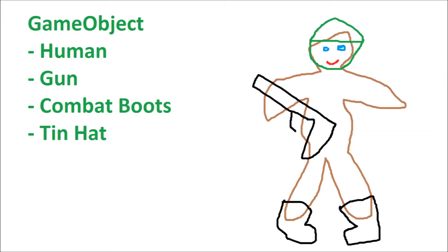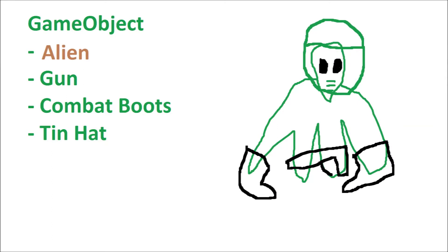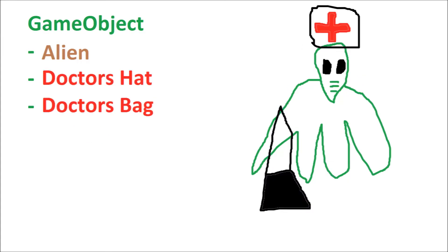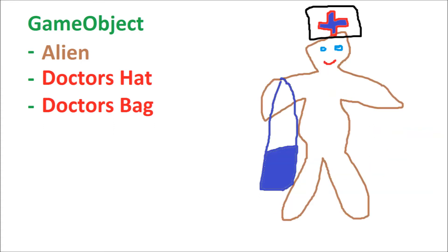Now let's explore the power of component-based design. Let's say I want to make an alien soldier — all I do is replace the human component with an alien component, and we have a functioning alien soldier. If I then want to make a medic, it's simply a matter of changing out a few components. Note that with this approach, you could easily arm a medic with a gun, or any other combination of weapons you can think of. And if I want to make a change to how a medic works, because I'm using the same code across all of my medics, I can just make the change once and not need to worry about updating it in multiple places.